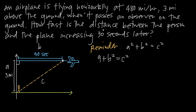We also need to find the distance between the observer and the airplane. The length of side B is given to us in terms of time because we're interested in 30 seconds after the plane passes the observer, which is why we said 30 seconds here. In order to convert this to a distance, we go back to our problem which tells us that the plane is flying at 480 miles per hour. So in other words, how far does the plane travel in 30 seconds?